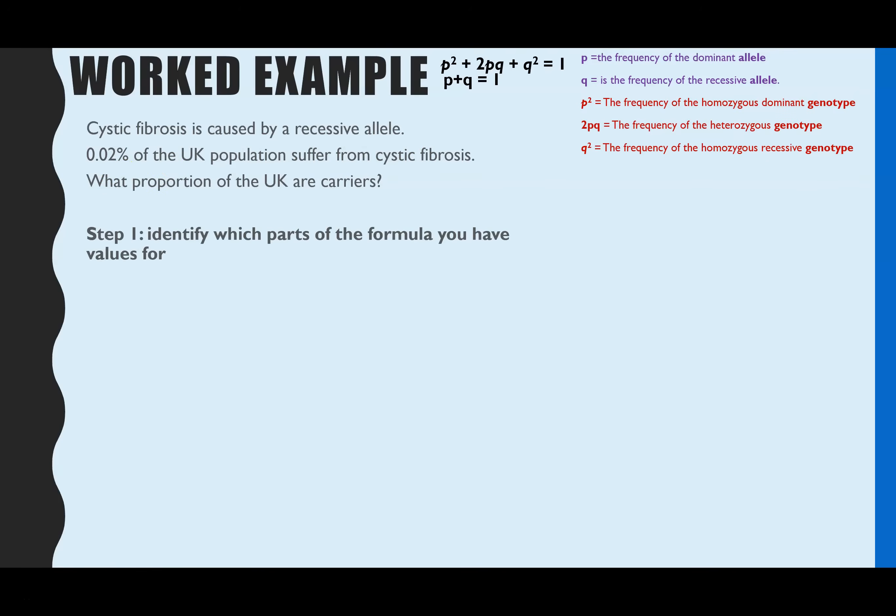You always start with: identify which parts of the formula you have values for. If you're new to Hardy Weinberg, I'd recommend whenever you have a go at practice questions, always write out the two formulas at the top of your page, but also what each component of the formula represents. Because each of the steps will then be much easier if you can look back at your key. When you are more familiar, you won't have to do that every time. You'll start to remember what the P and the Q represent, and P squared, 2PQ, and Q squared. But until you're at that stage, do that every time and you'll start to pick it up much quicker.